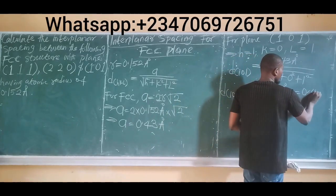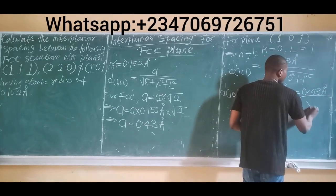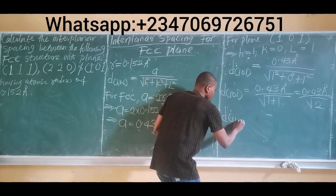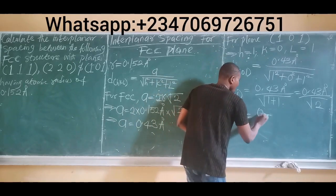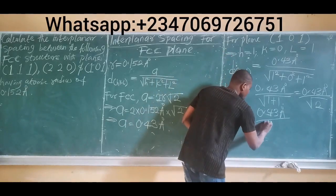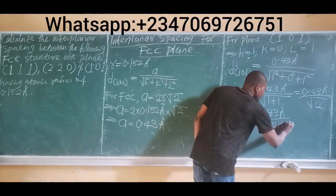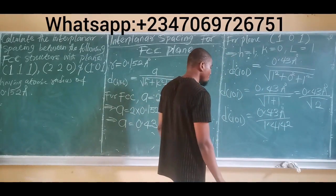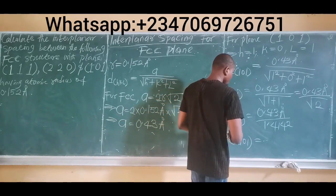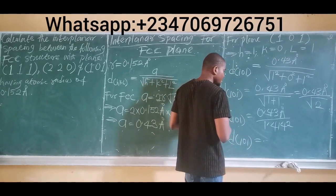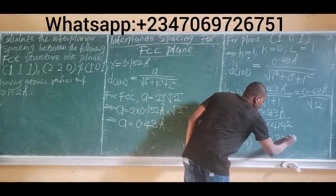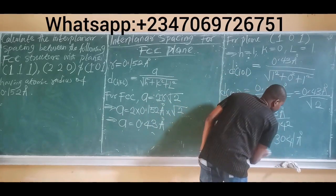So D(1,0,1) equals 0.43 Angstrom units divided by √2, and √2 = 1.4142. Therefore 0.43 divided by 1.4142 gives us approximately 0.3041 Angstrom units, which is the interplanar spacing for the (1,0,1) plane.